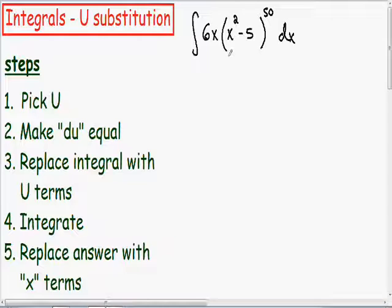We have to use some other method and the method that we have to use is u substitution. So let's dig right into this example. I wrote the steps for you on the bottom left part of the screen. Our first step is to pick our u, and our u is going to be the inside of the parenthesis. So our u is going to be x squared minus 5.